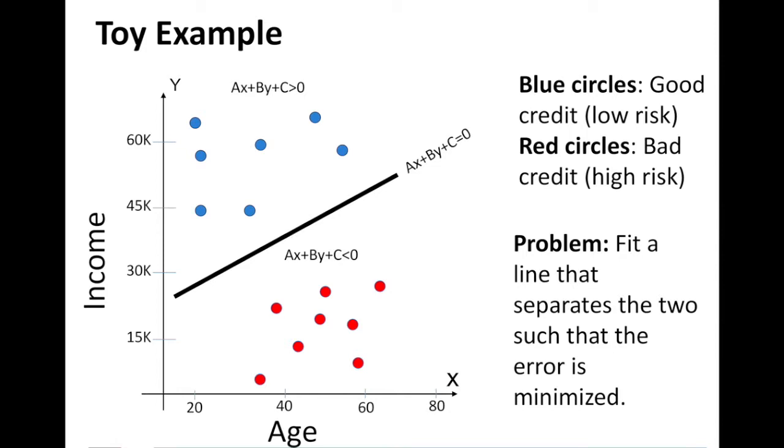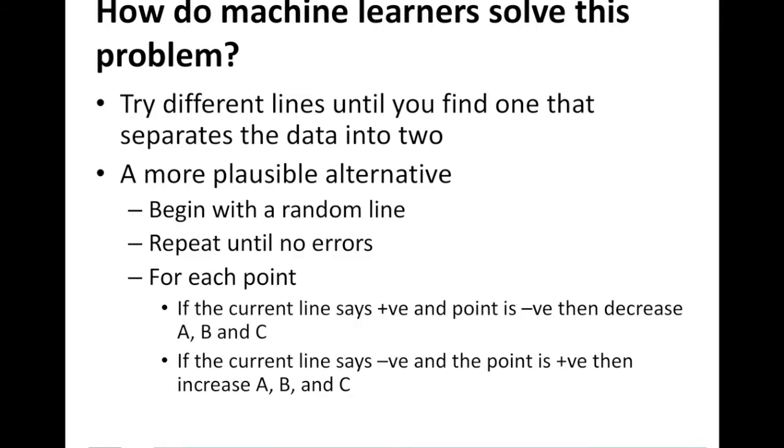Okay. How do machine learners solve this problem? Try different lines until you find the one that separates the data into two. Is that like a solution? It's not an algorithmic solution for us computer scientists, right?